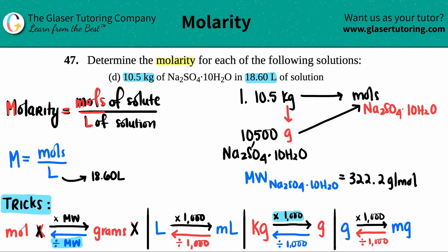Now in order to go from a gram to a mole, remember all you're doing is you're dividing by that molecular weight. So 10,500 divided by the 322.2.